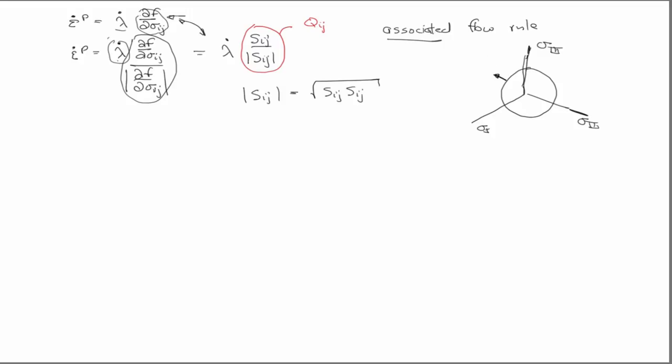And so that's why it's called associated flow rule—because the flow, the flow or the evolution of the plastic strain, is associated with the yield surface. And in this case, it's normal to the yield surface. But there are things, and they're sometimes used in soils or geomechanics, where the flow is not necessarily associated to the yield surface.